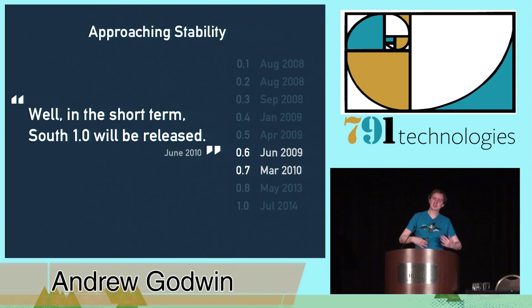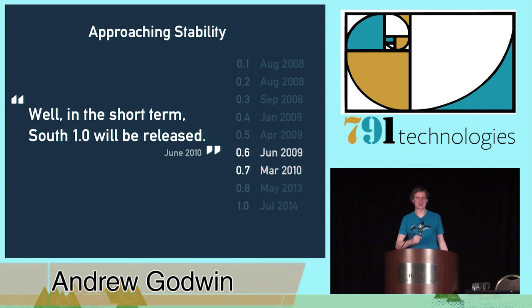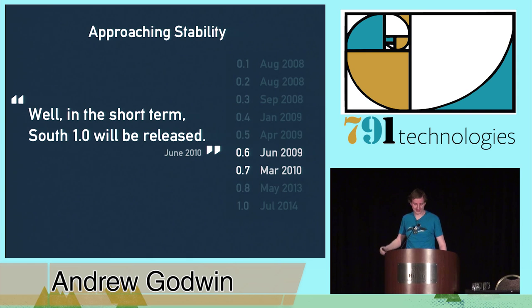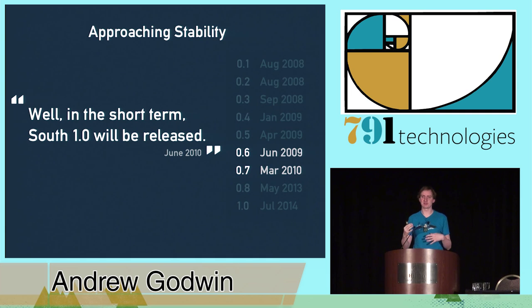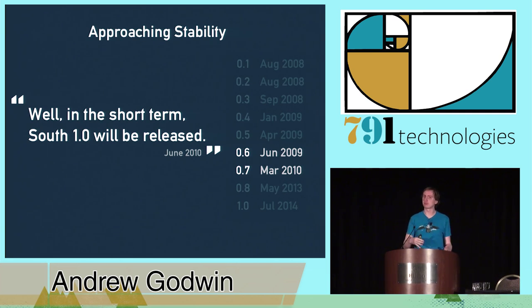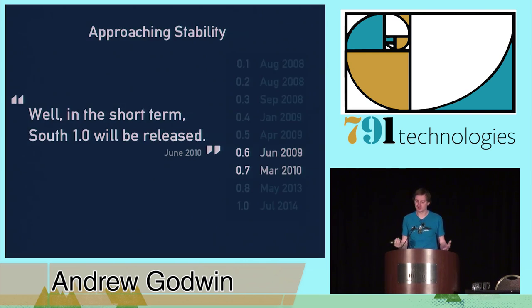Around 0.4 and 0.5 you start seeing things like data migrations, different operations, and auto-detection gets better. It becomes more of a thing where you simply change models, run schema migration, and then have the migration. As we get to 2009–2010, we approach stability. Very optimistic me, bear in mind this is four years ago, said 'South 1.0 will be released in the short term.' He's very wrong. This period is where South becomes pretty much what the community requires of it.